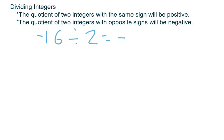There we go. And the absolute value of the answer will be the absolute value of the quotient of the 16 and the 2. So 16 divided by 2 is 8. Remembering that a negative divided by 8, we will have a negative 8.